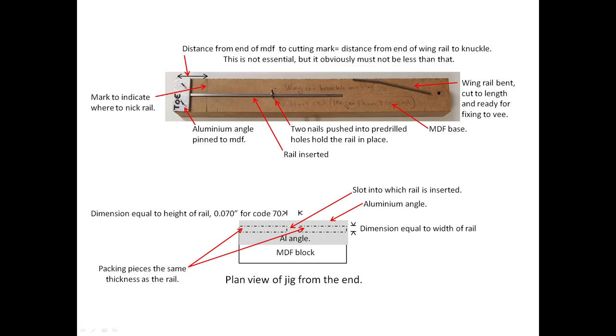The photograph shows a length of rail inserted into the jig ready for nicking, and one wing rail bent, cut to length and ready to form part of a common crossing. The bend angle should match the angle of the V and can be adjusted to get it exactly correct.